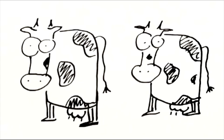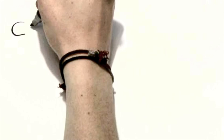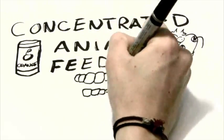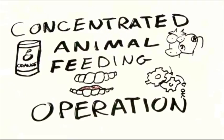This is a cow. These are two cows. It would take 1,000 of these cows to reach the minimum number needed for a large CAFO, or Concentrated Animal Feeding Operation, also known as a factory farm.